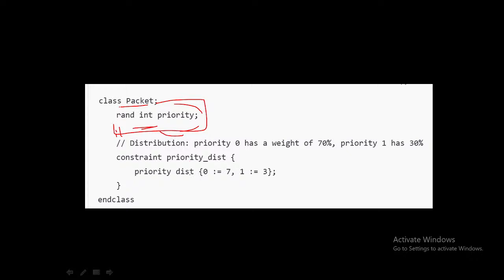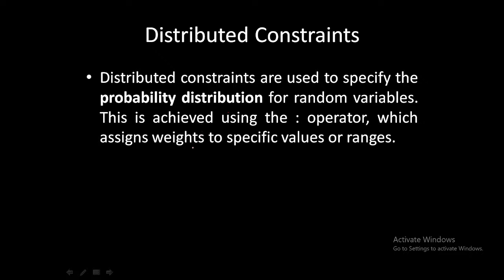In the case of distributed constraints, we are giving the probability: 0 should occur at least 7 times and 1 should occur for 3 times. With the help of distributed constraints, we are giving the weight or probability of occurring of a particular value. Here, 0 has a weight of 70% and 1 has a weight of 30%.